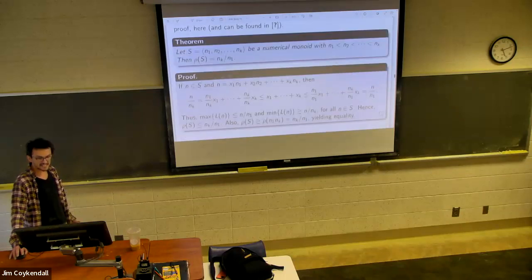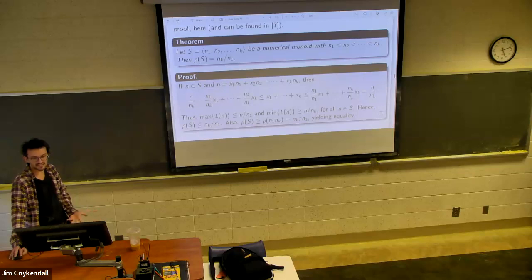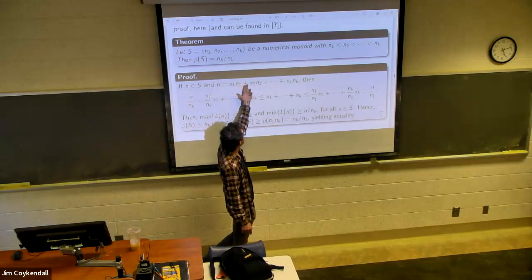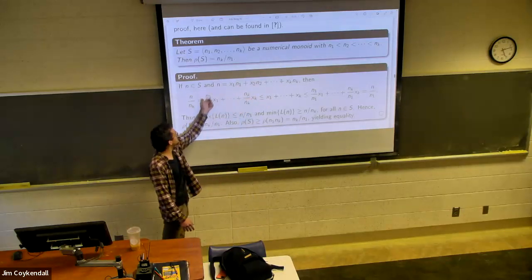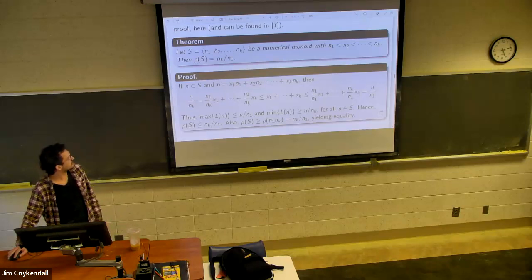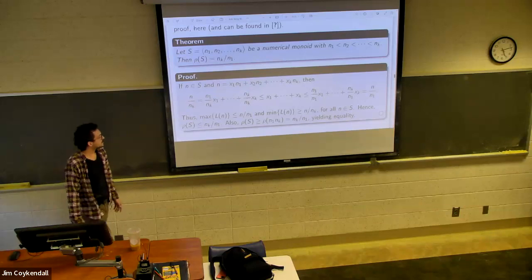So the proof of this is kind of simple. We say, okay, well, if N is in S, then clearly you can... There are coefficients X1 through XK that you can express N as a linear combination, right? If it's in our monoid, then you should be able to find these coefficients to get to N. So now we just say, okay, well, N1 over N, or N over NK. We kind of get this, you know, I won't struggle to read through it. We can just observe.